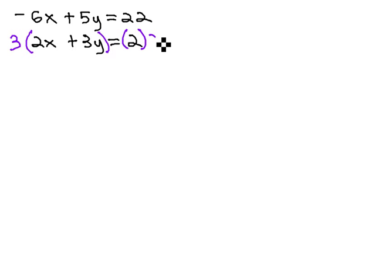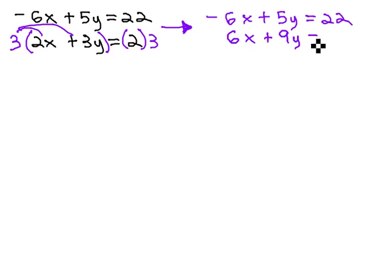Of course, we must do both sides of the equation the same way. And let's see what this gives us. The first equation we didn't change. It's still negative 6x plus 5y equals 22. The second equation, when we distribute the 3 through, gives us 6x plus 9y equals 2 times 3, or 6.